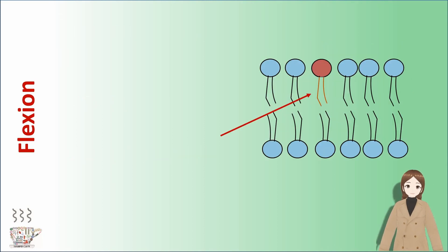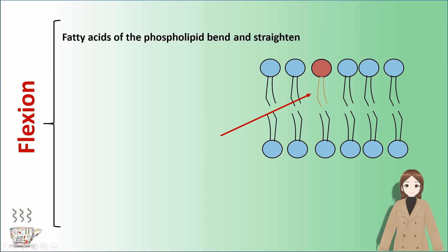The third movement is flexion. In this movement, fatty acids of the phospholipid bend and straighten. The speed of this movement is rapid and it's frequent, too.